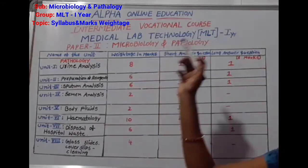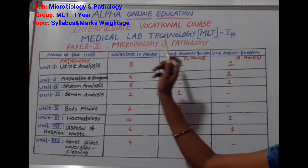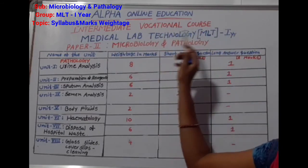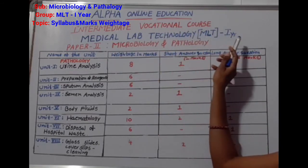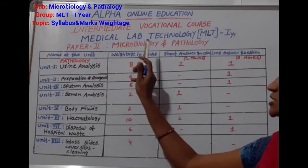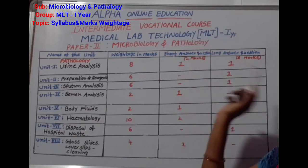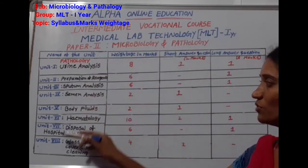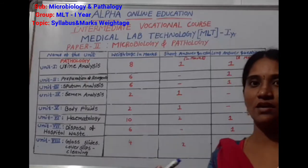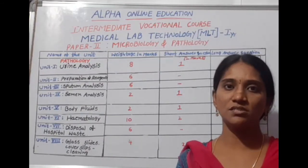Today's topic is the Intermediate Occasional Course — that is Medical Lab Technology or Medical Lab Technician Course, MLT first year. Paper 2 is Microbiology and Pathology. In pathology we have eight units covering collection of samples and diagnostic tests.